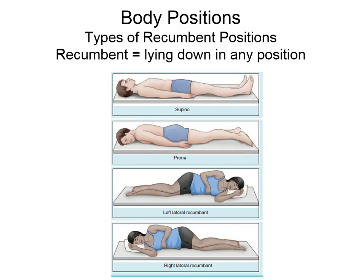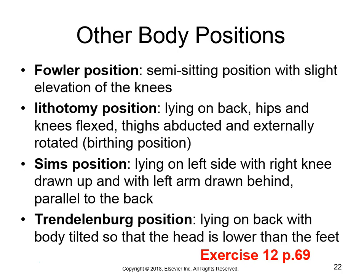Recumbent means lying down, and there are different types of recumbent positions — think of a recumbent bicycle where the person is laid back. Supine is lying down on your back, face up — also called the dorsal recumbent position. If you are lying prone, you're lying with your front on the ground — that's the ventral recumbent position. There are also lateral recumbent positions when you're on your right or left side.